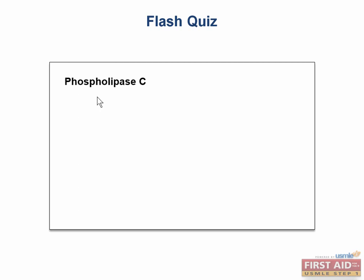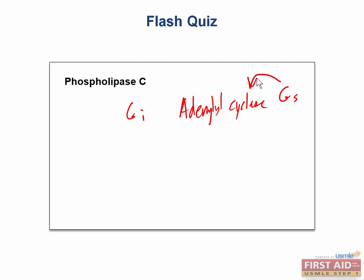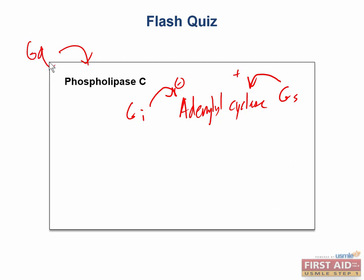In review: GS and GI G protein messengers act in opposition on adenylyl cyclase — GS stimulates it while GI inhibits it. GQ G proteins act via phospholipase C to elicit downstream effects. So GI and GS act upon adenylyl cyclase, while GQ acts via phospholipase C.